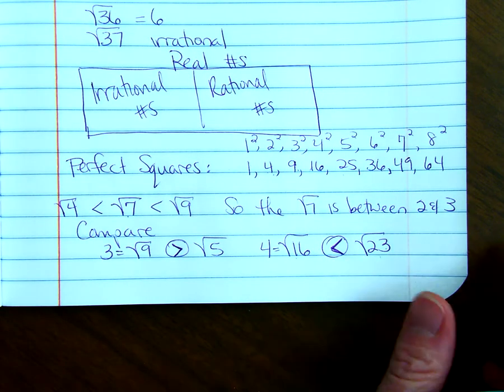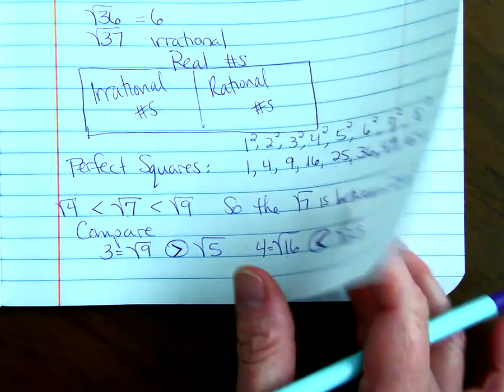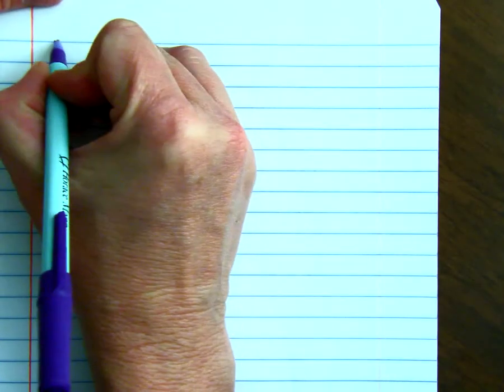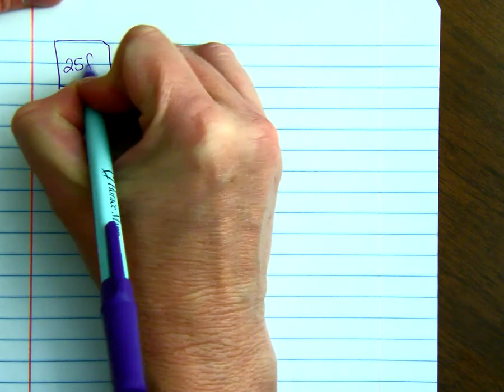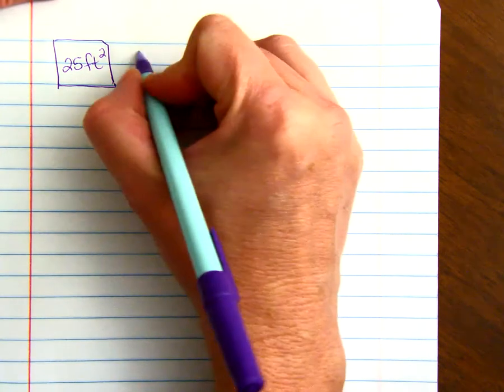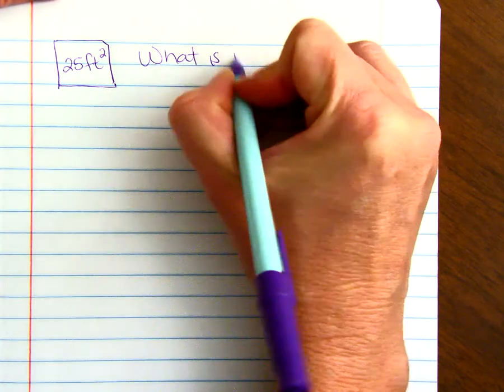Okay, I have one more concept to go over. And that is if you are given the area of a square and you want to know the side length. So, let's draw a square inside. Write 25 feet squared. If we have a square, the area is 25 feet squared, what is the side length?